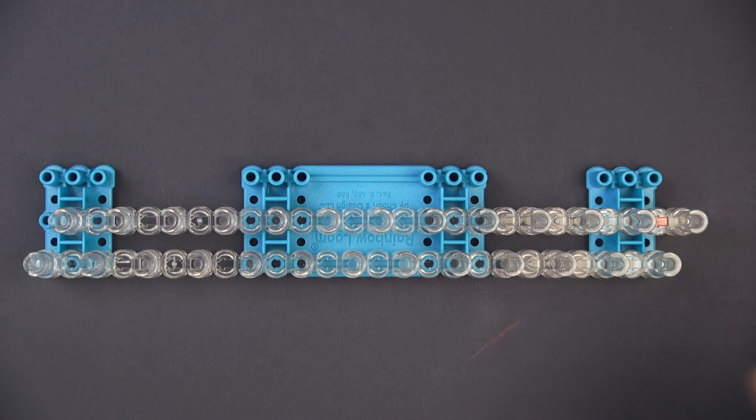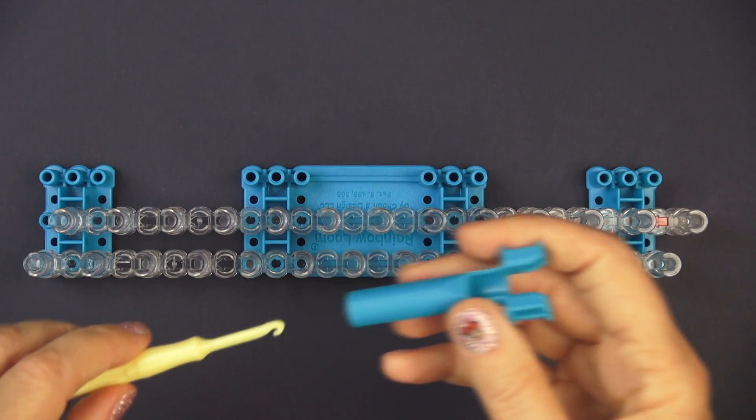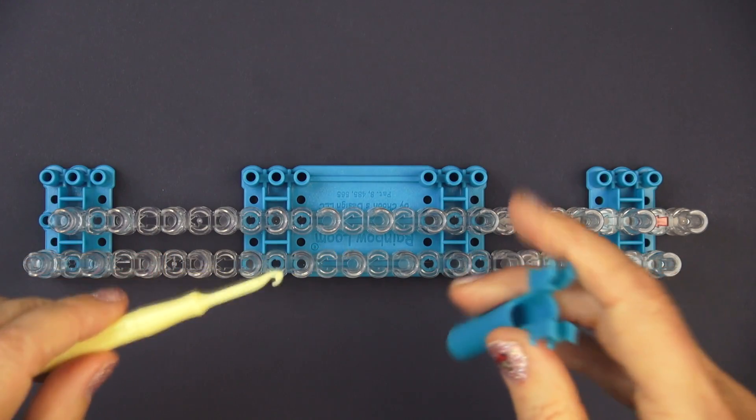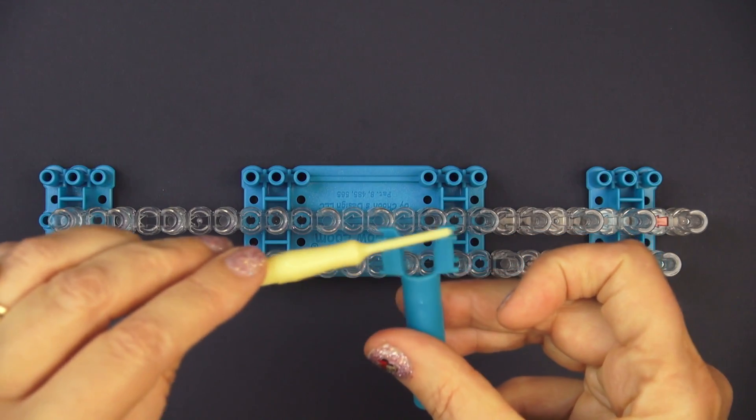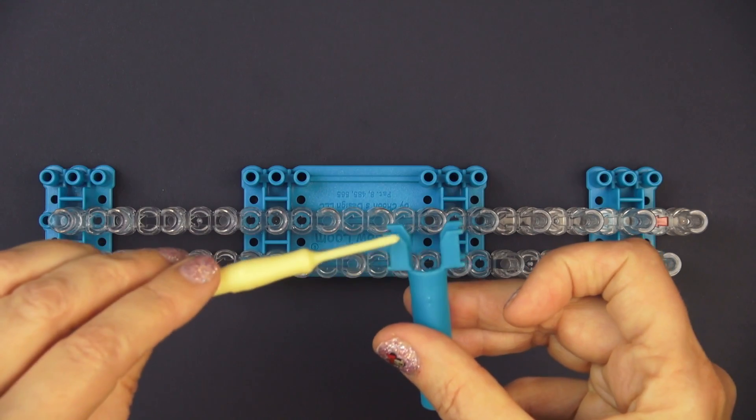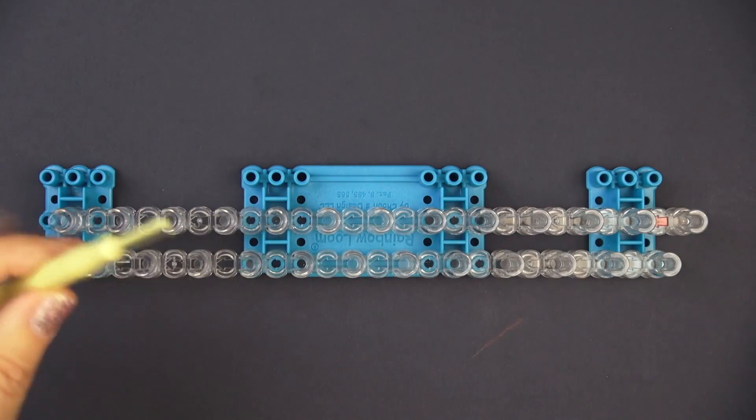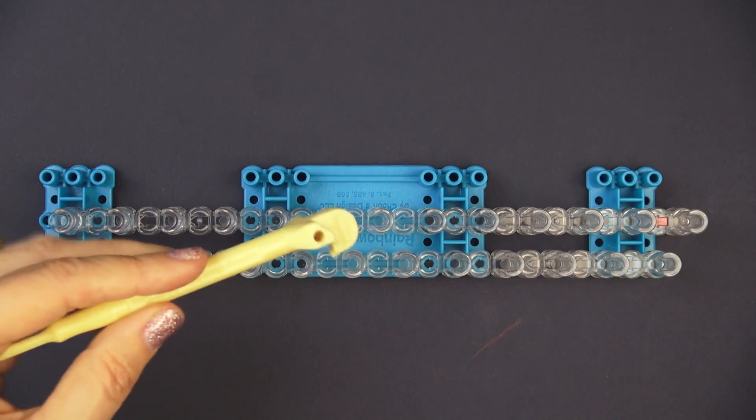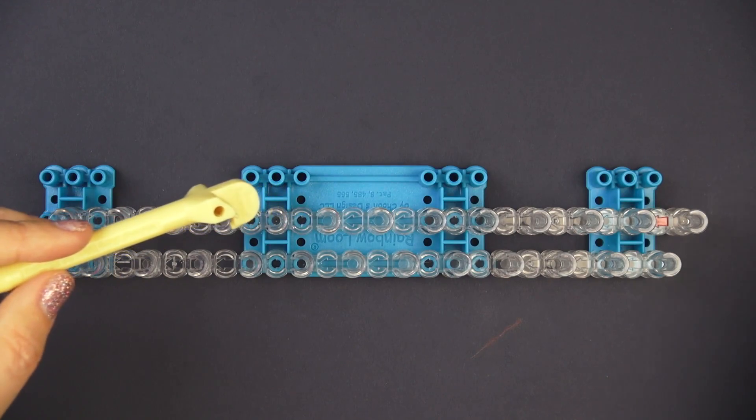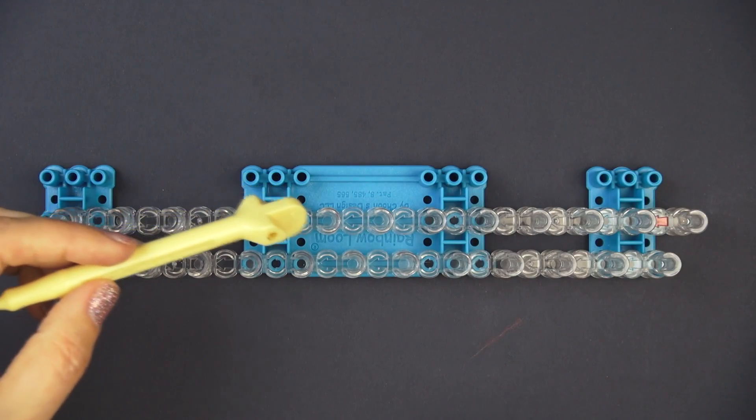The tool we're gonna use for picking up the rubber bands is this hook. This acts like a mini loom if you're making smaller things. These two things are posts and then this tool is used to take the bottom of the loom apart and change it around.